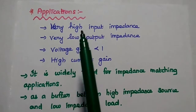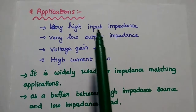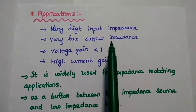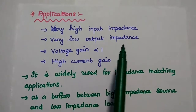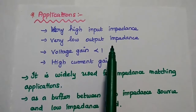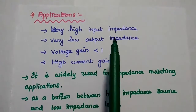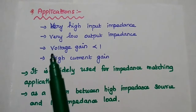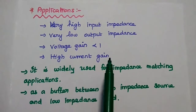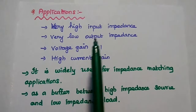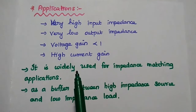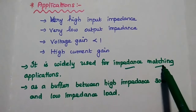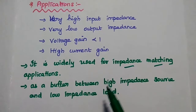The applications of common collector configuration: this configuration has very high input impedance and very low output impedance — just the opposite of the common emitter configuration. Its voltage gain is less than unity, but it has very high current gain. Due to these properties, the common collector configuration is widely used for impedance matching applications.